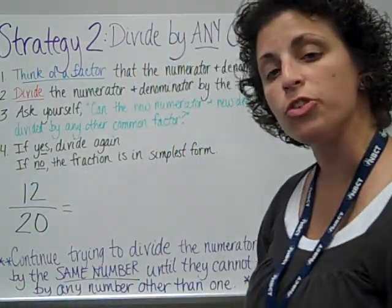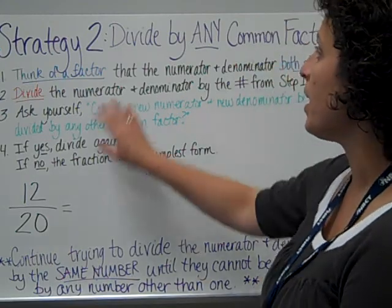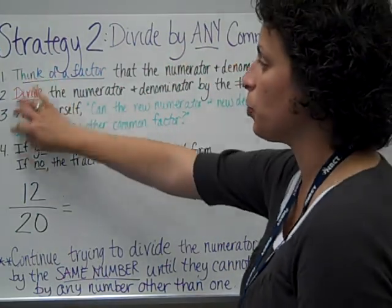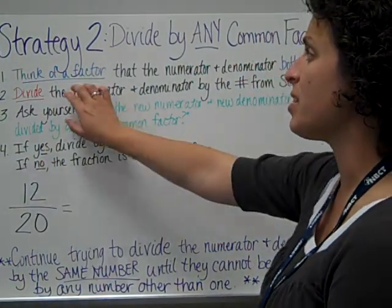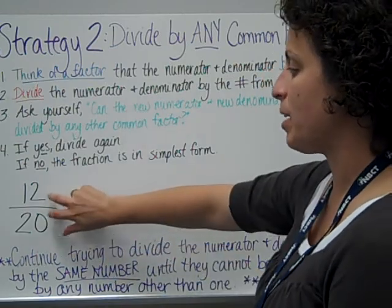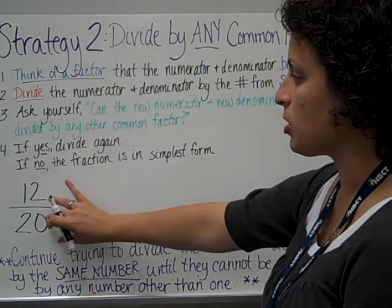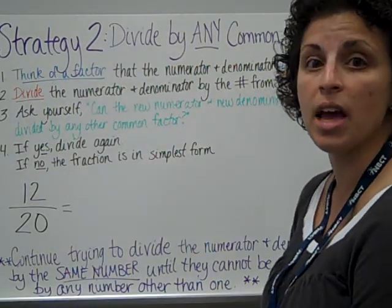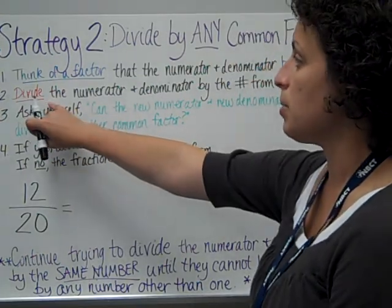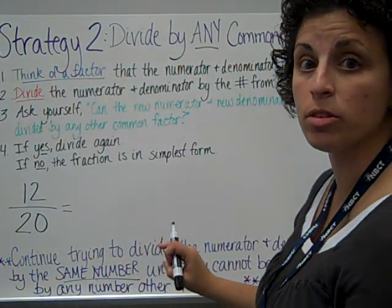But there's another strategy that you might like better for reducing a fraction to its simplest form. And it is to divide by any common factor. There's 4 steps that I have to go through. First, I'm going to think of a factor, a number that I can multiply by and make both of these numbers, because they have to share the factor. And when I'm looking at 12 20ths, I know that they're both even numbers, so I can divide them both by 2. Step 2 is to actually divide the numerator and the denominator by that number that I came up with, so 2.